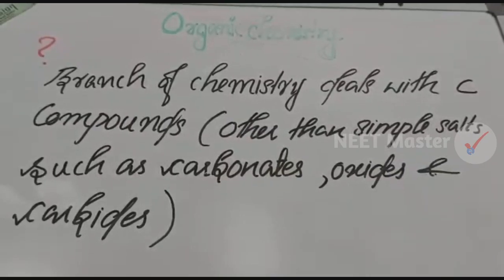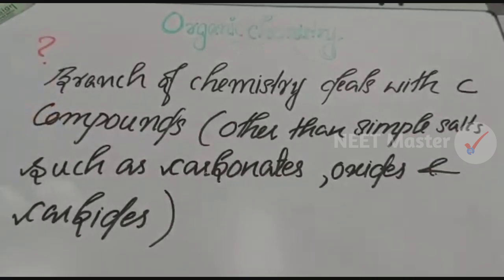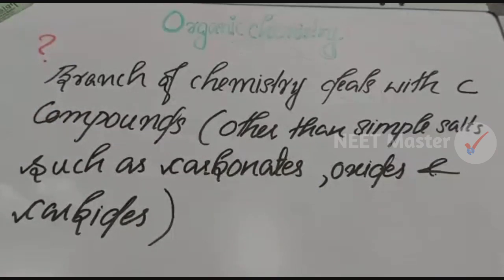What is organic chemistry? Hello friends! Today we are going to start organic chemistry. Organic chemistry is a branch of chemistry that deals with carbon compounds. Carbon compounds are central to organic chemistry. Other carbon compounds without carbon are generally not included — there are exceptions.